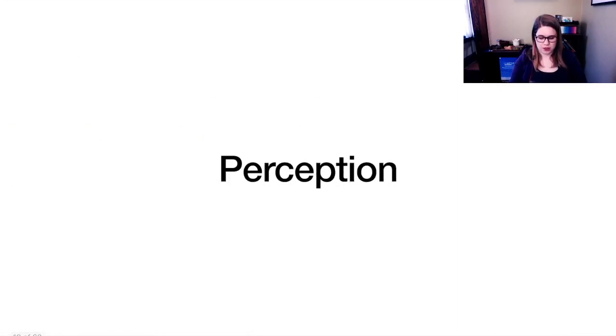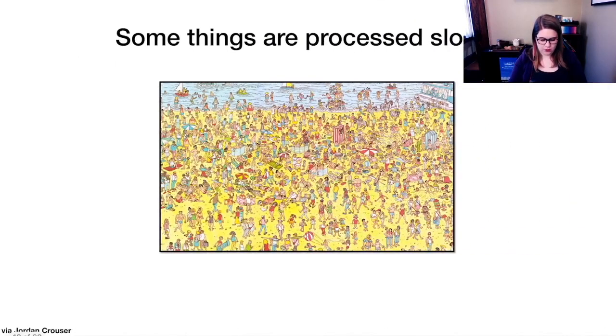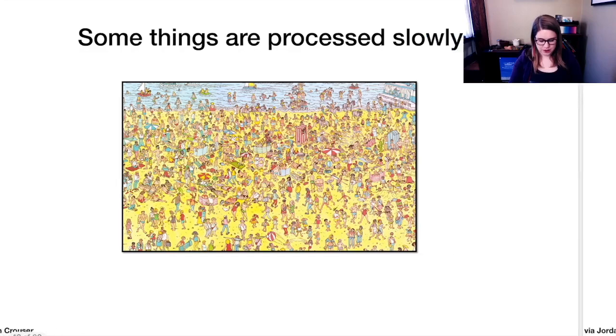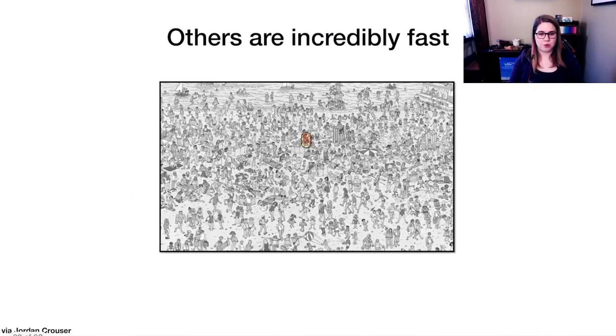I want to think about some more perceptual effects. We've thought about perceptual effects with color and the fact that sometimes you can perceive things more easily than others. In terms of slow processing ability, if I told you to find Waldo in this image, that would take you quite a while to process. But if I gave you this, you could probably process very quickly where Waldo was.